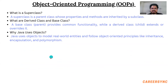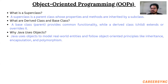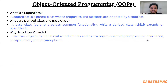What is a superclass? A superclass is a parent class whose properties and methods are inherited by a subclass. What are derived class and base class? A base class provides common functionality while a derived class extends or overrides it. Why does Java use objects? Java uses objects to model real-world entities and follows object-oriented principles like inheritance, encapsulation, and polymorphism.